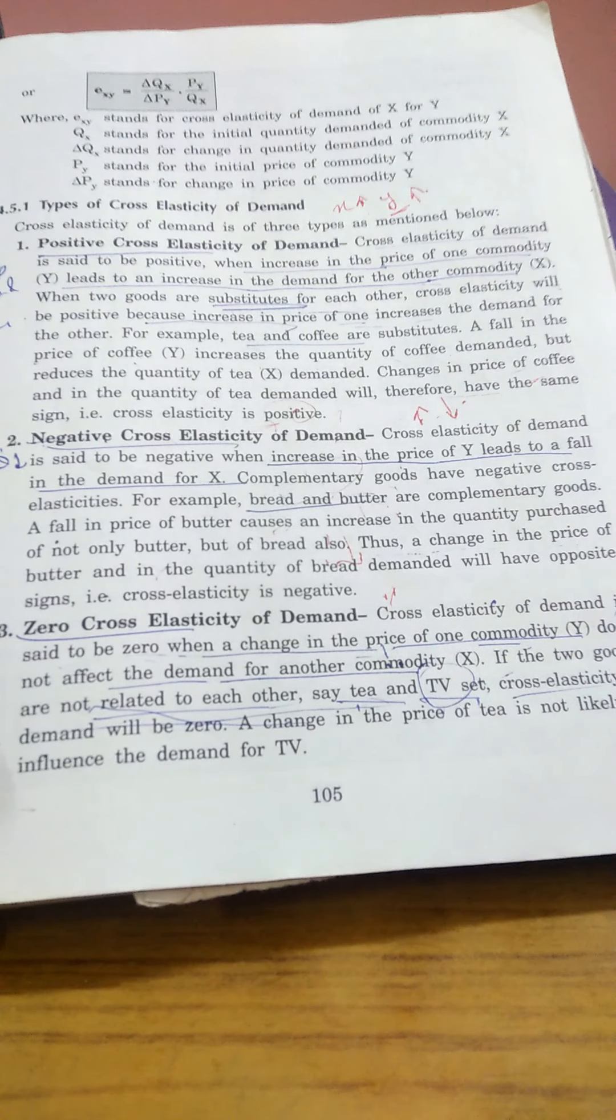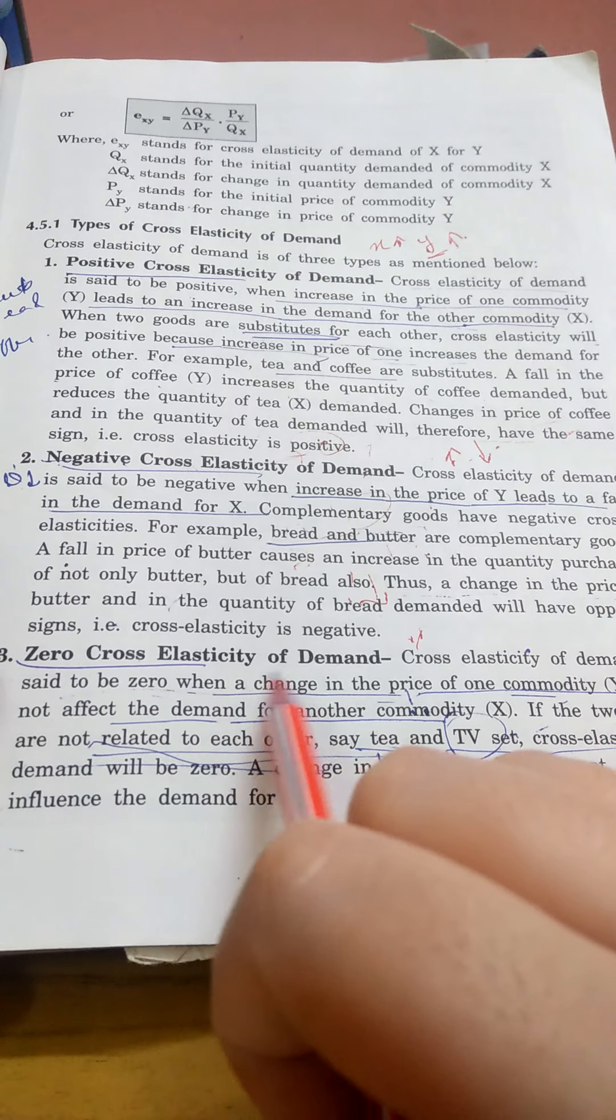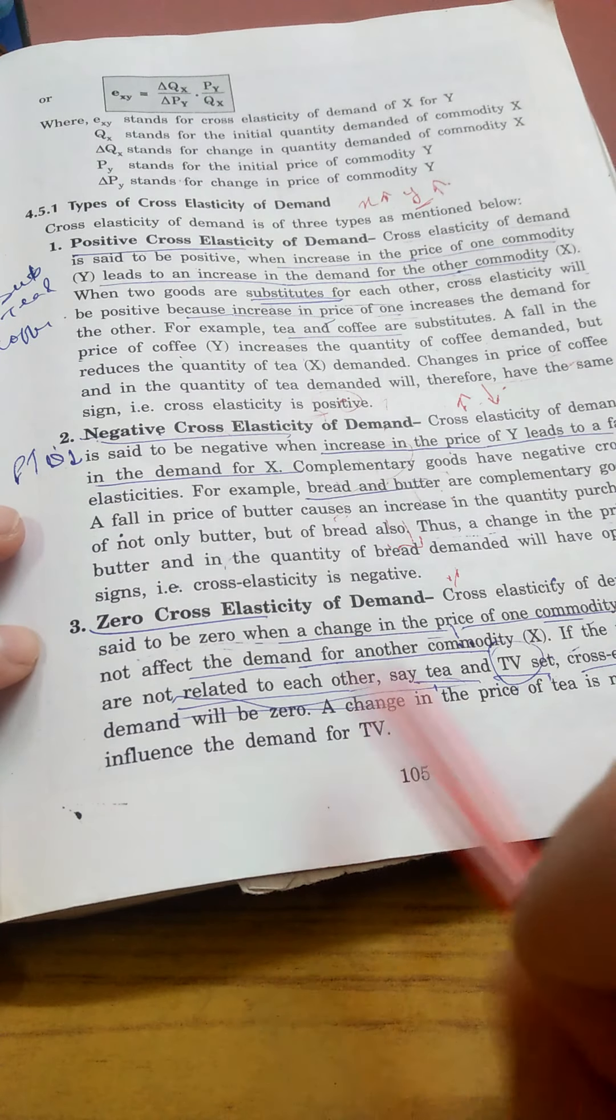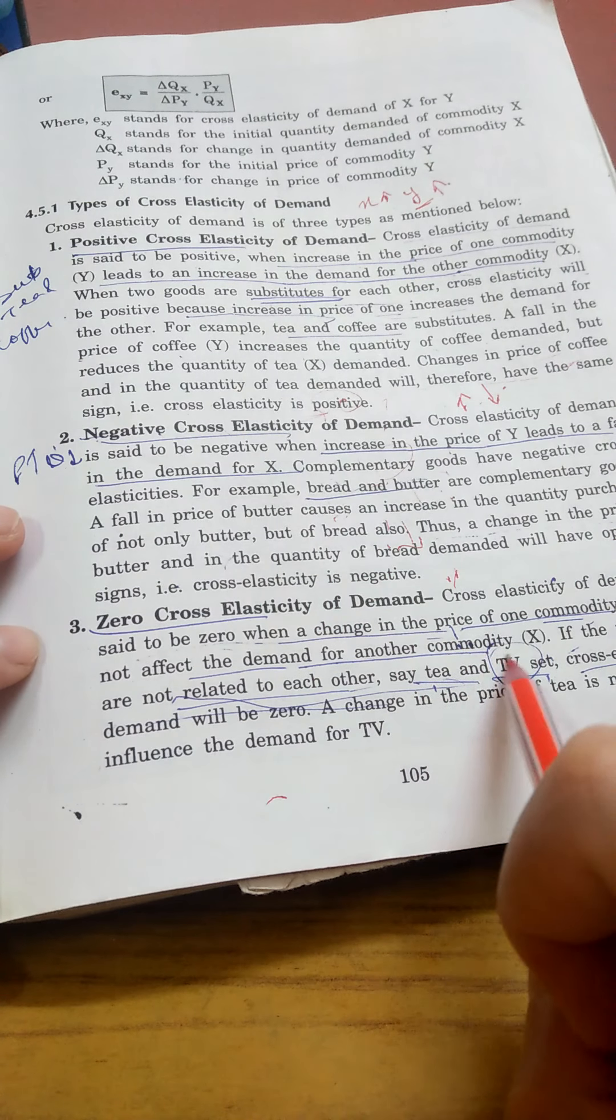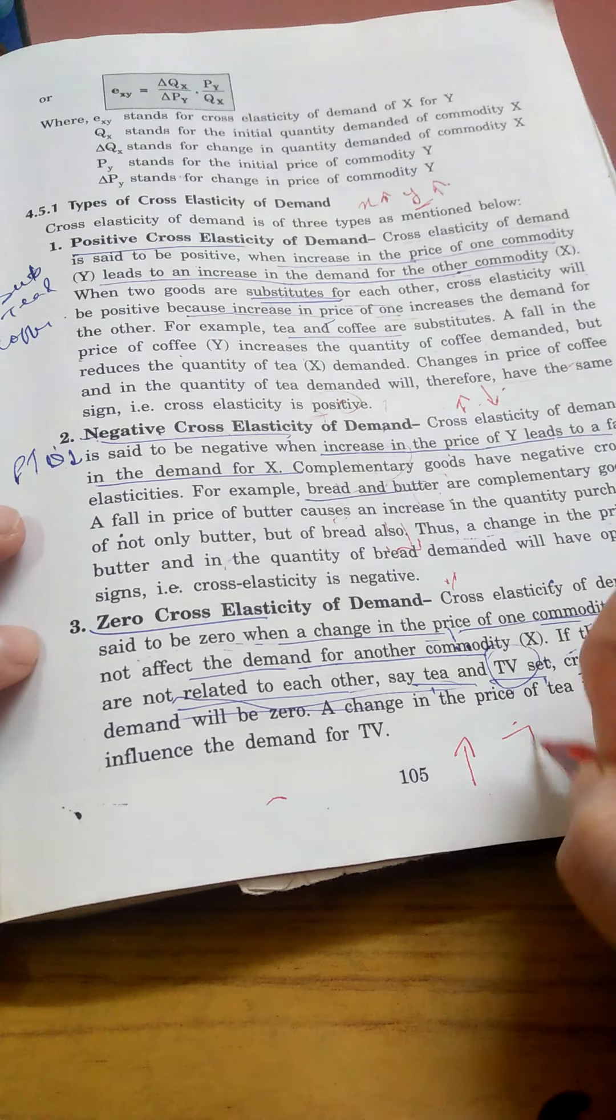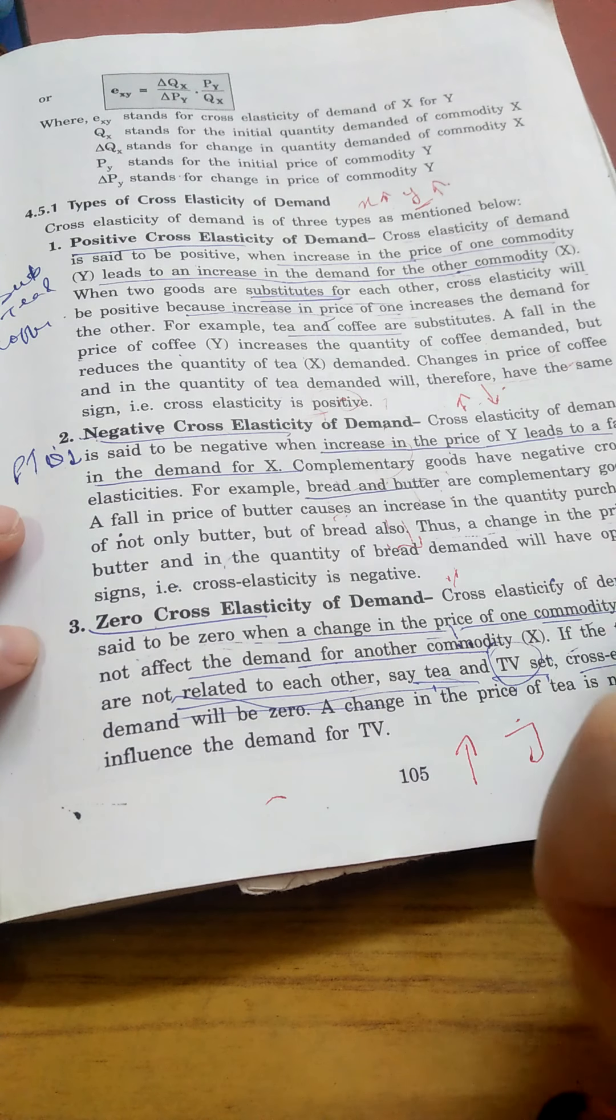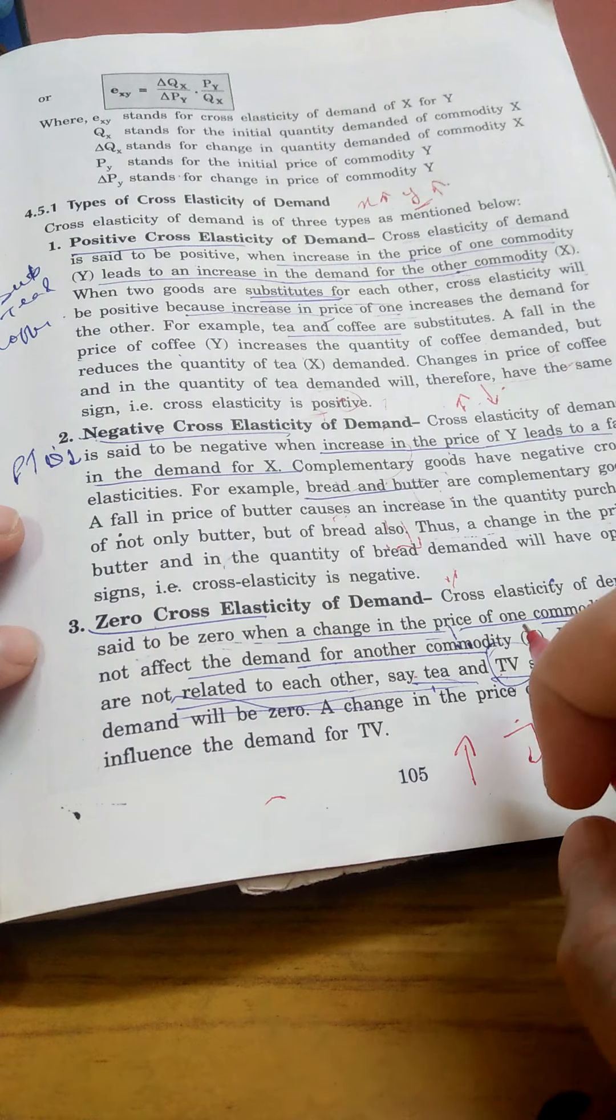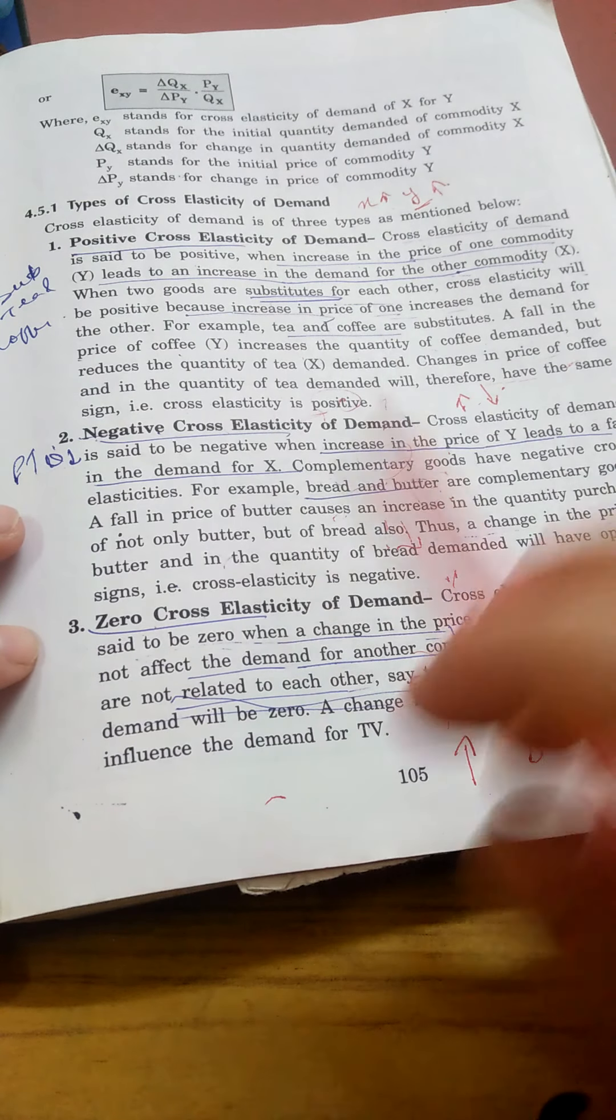Next, third point is zero cross elasticity of demand. Here there will be no effect on one commodity when another commodity's price changes. Zero means constant. For example, tea and TV. If TV prices rise, it won't affect tea demand, so here demand will be zero.